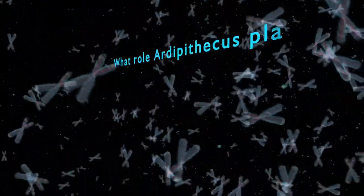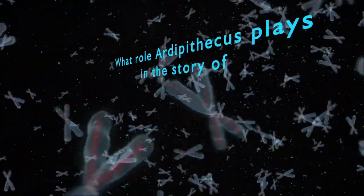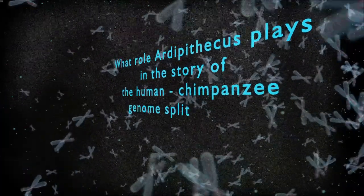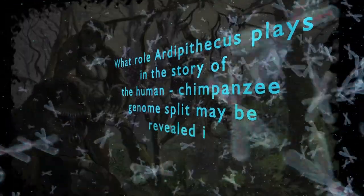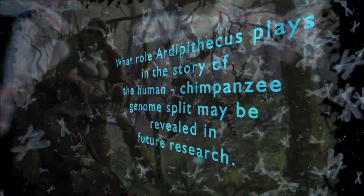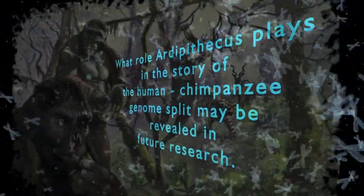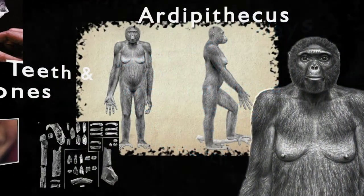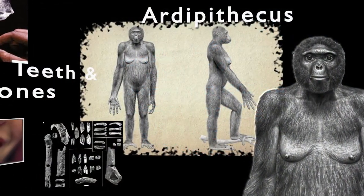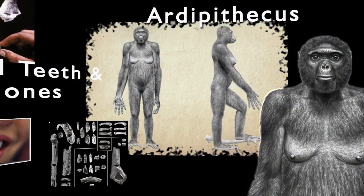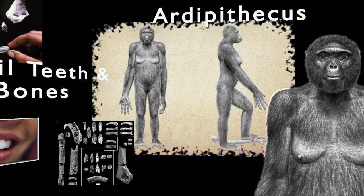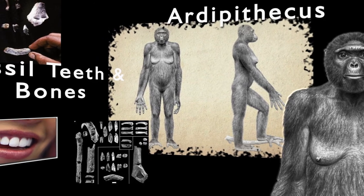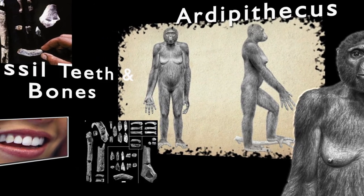What role Ardipithecus plays in the story of the human-chimpanzee genome split may be revealed in future research. The fossils of Ardipithecus kadabba consist largely of teeth, fragments of the lower jaw, pieces of the forearm, finger bones, a collar bone, and a toe bone.